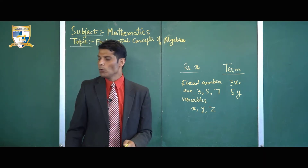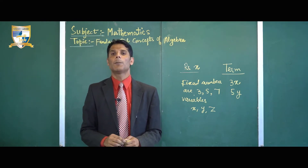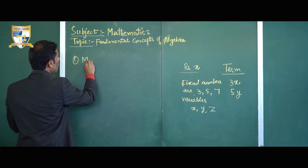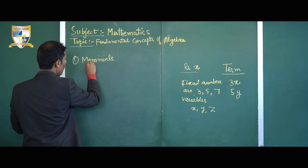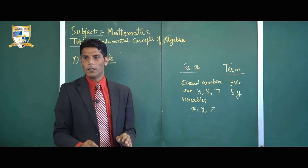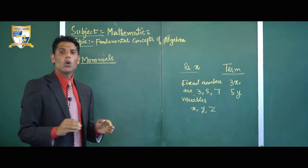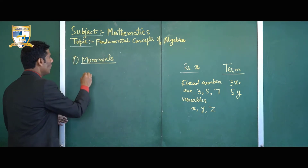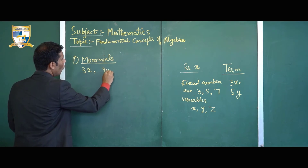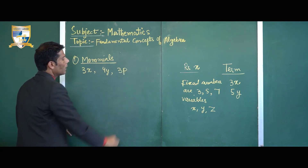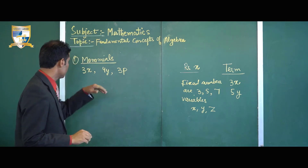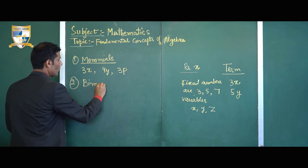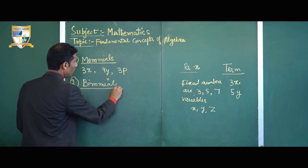I am going to discuss different types of algebraic expressions based on terms. First of all, monomials. Monomials are those algebraic expressions which contain only one term. For example, 3x, 4y, 3p — these are all called monomials.